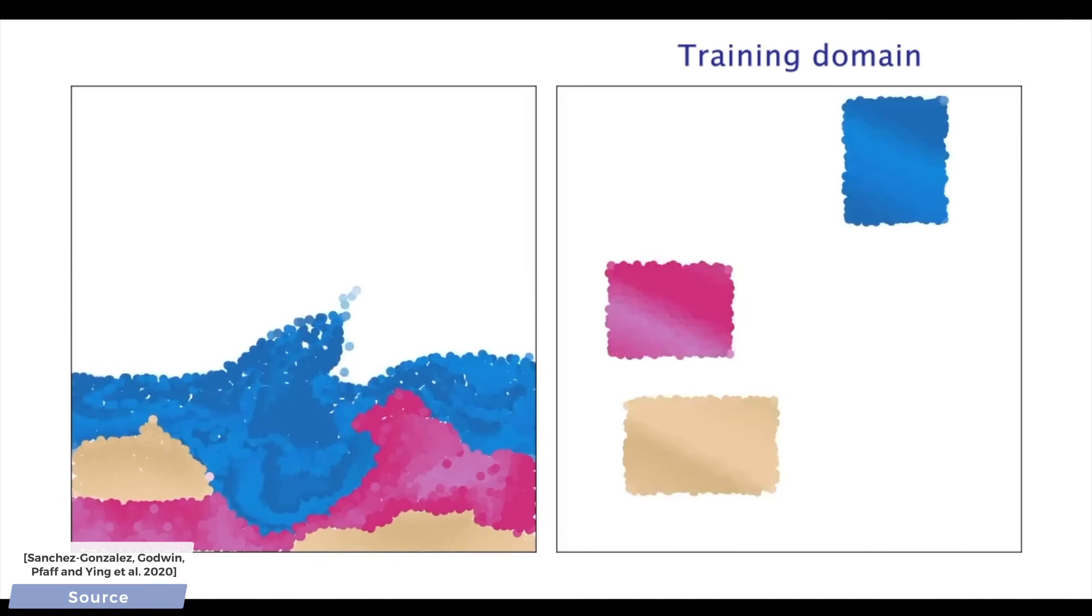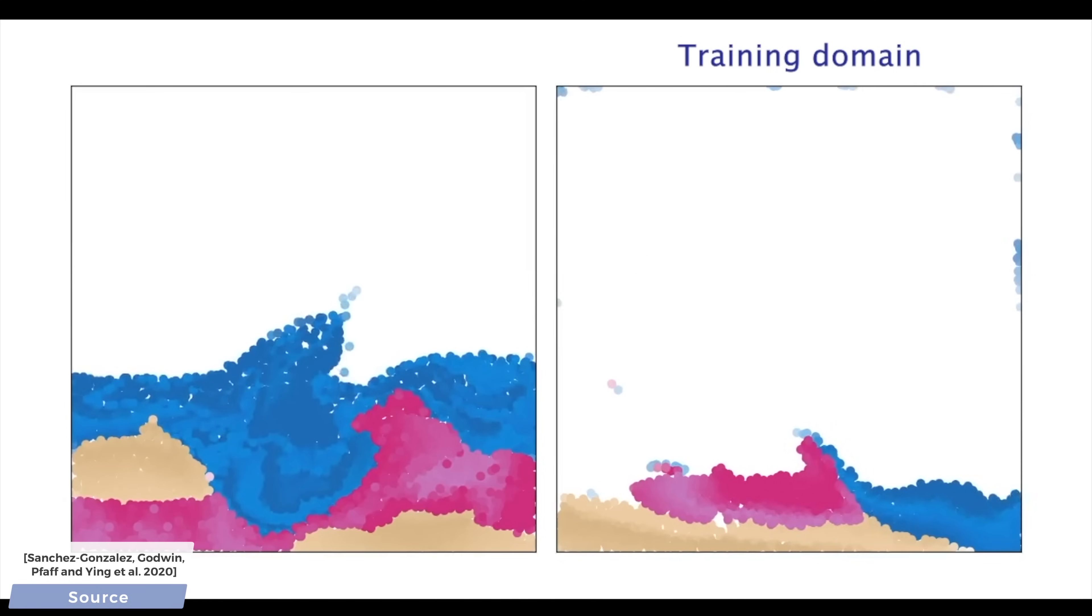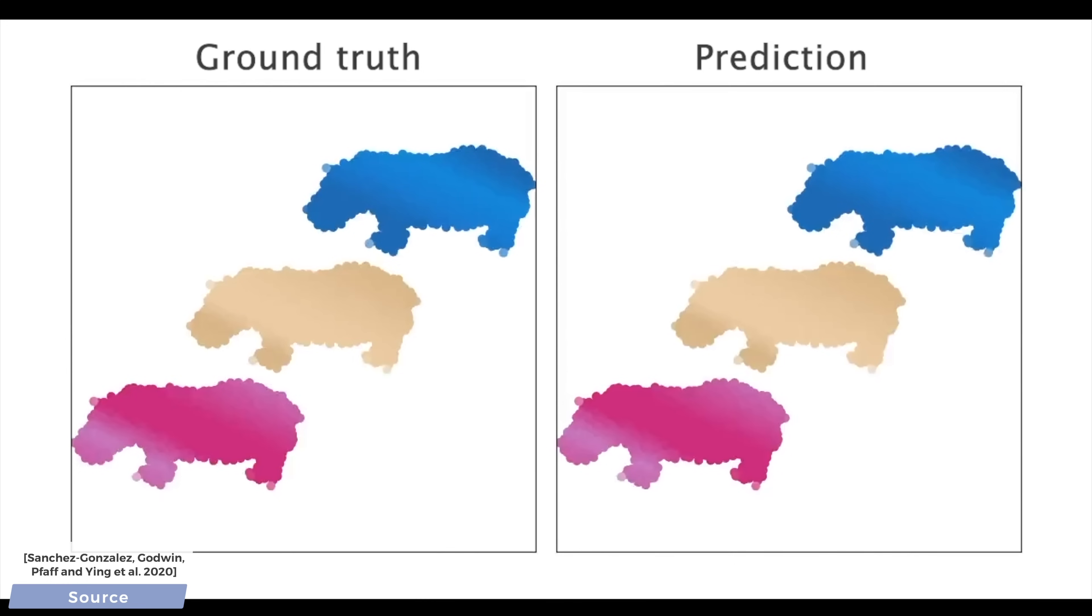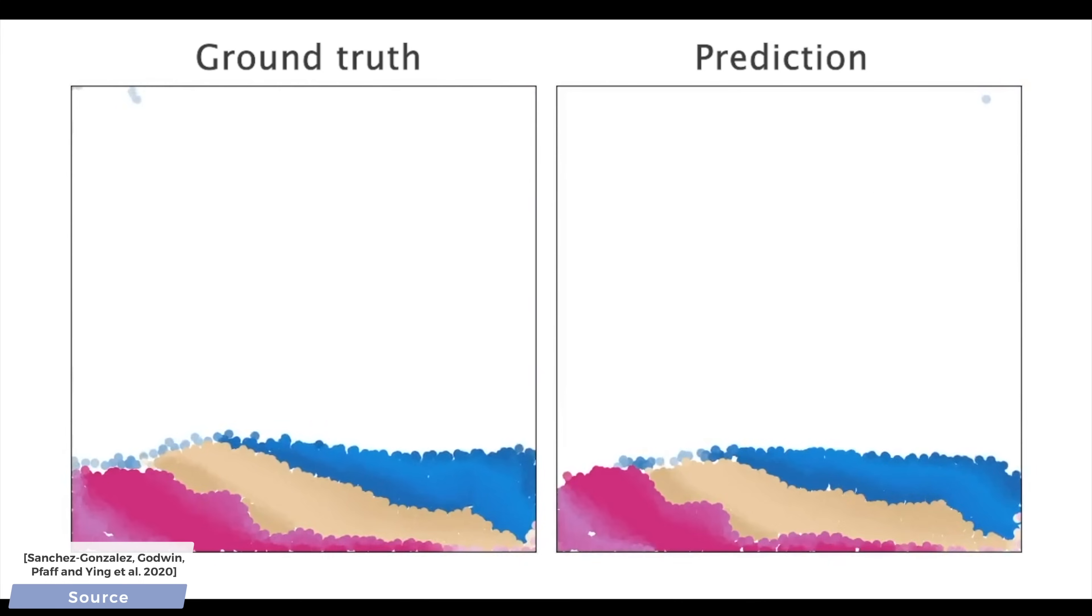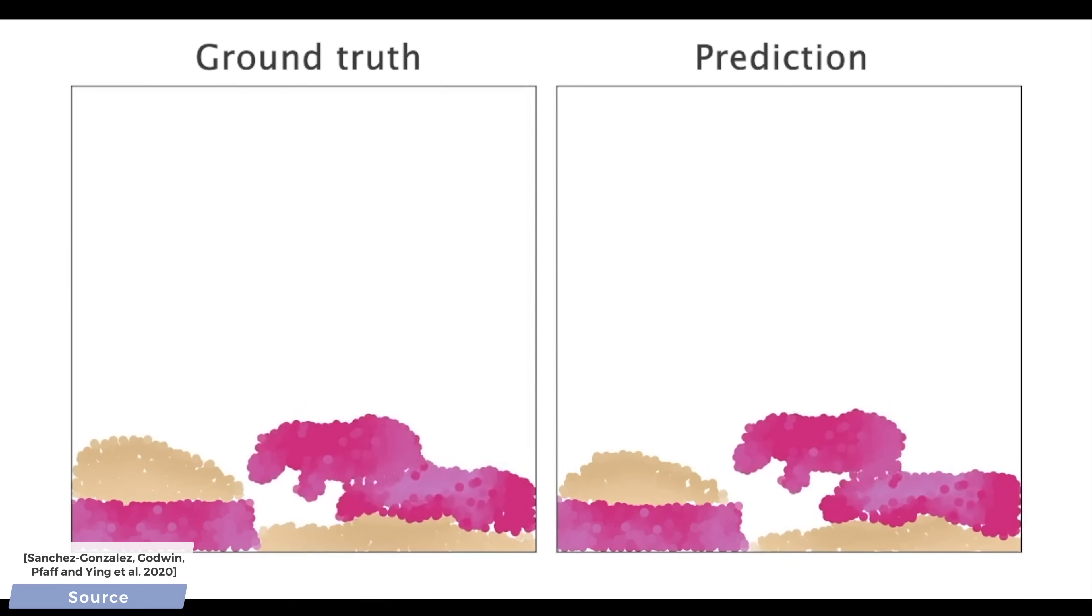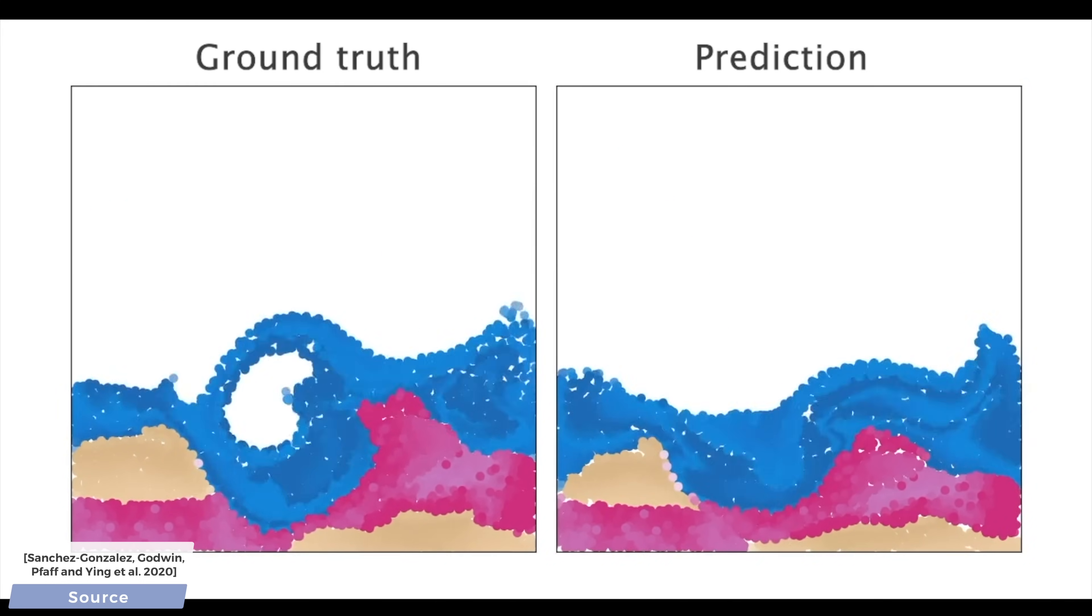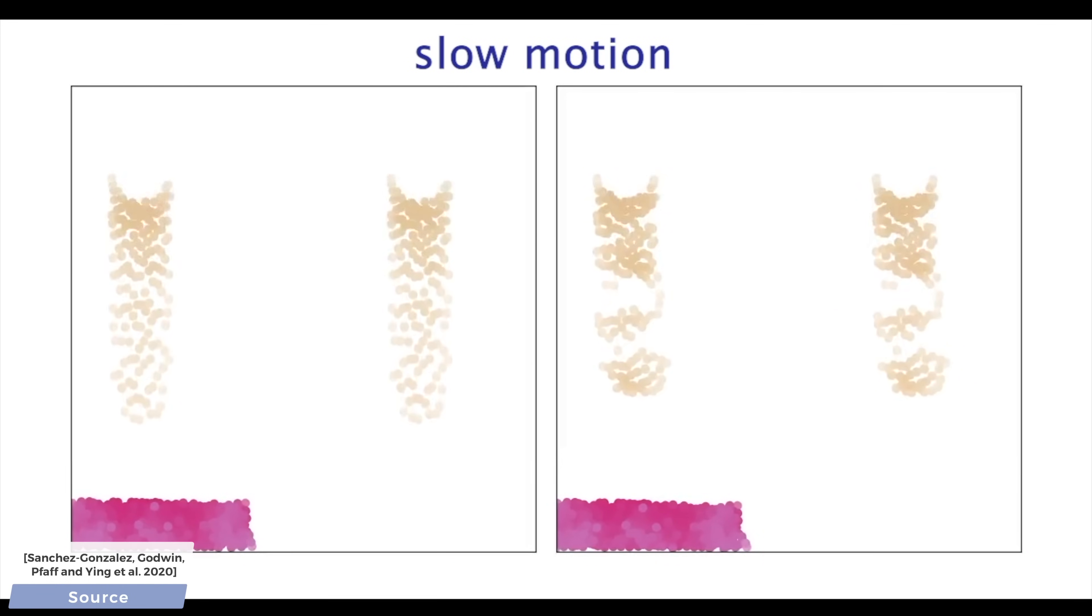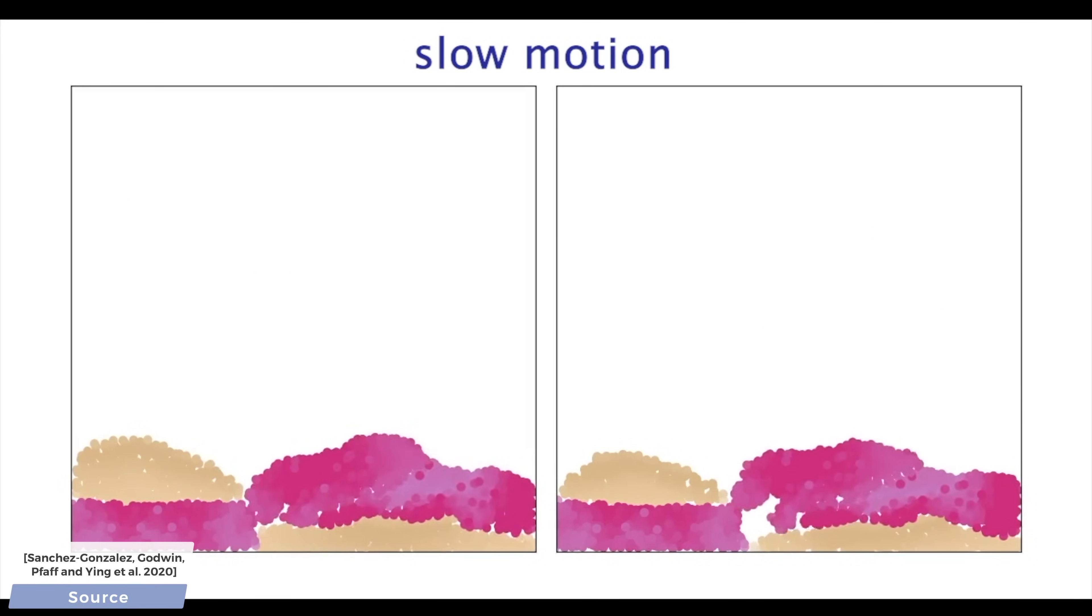And now, have a look at this one. This is a scene with the boxes it has been trained on. And now, let's ask it to try to simulate the evolution of significantly different shapes. Wow. It not only does well with these previously unseen shapes, but it also handles their interactions really well.